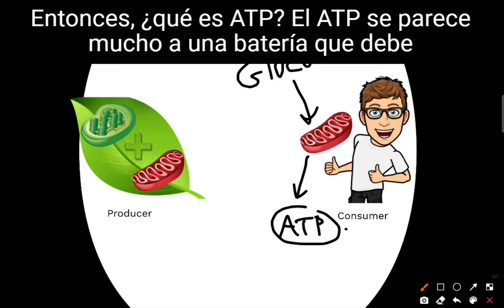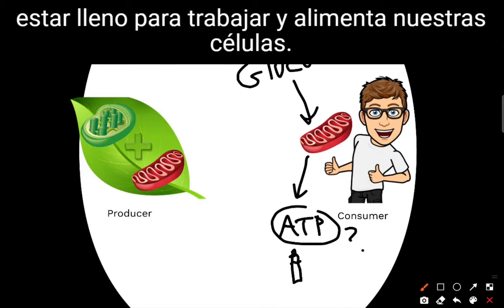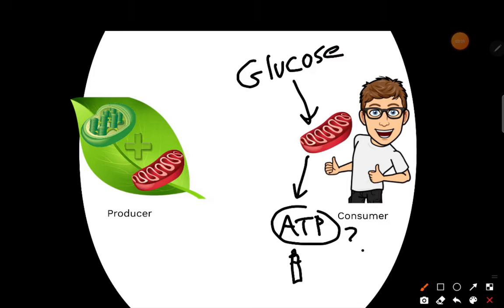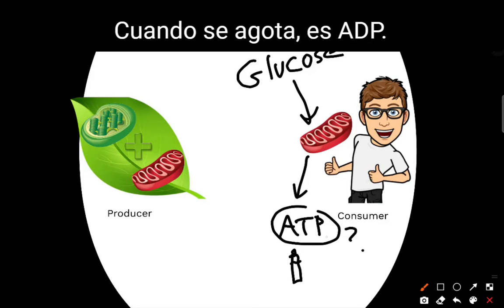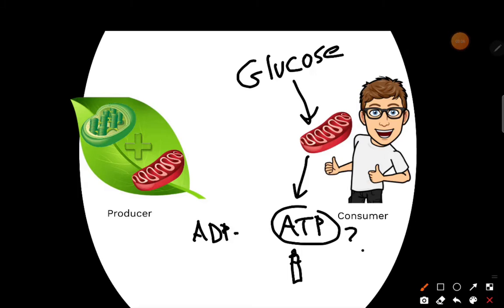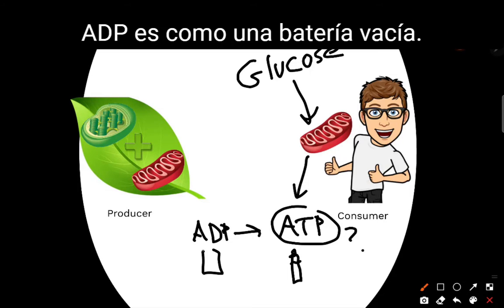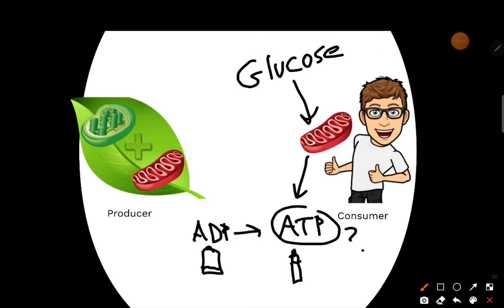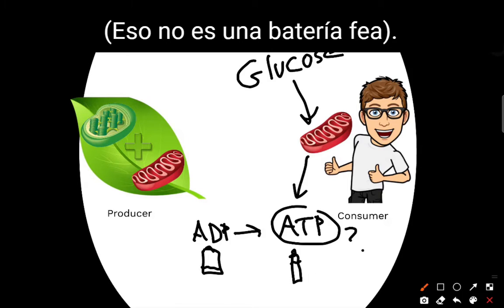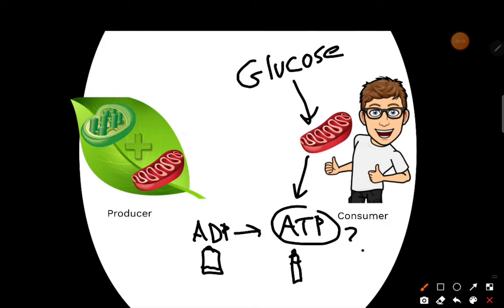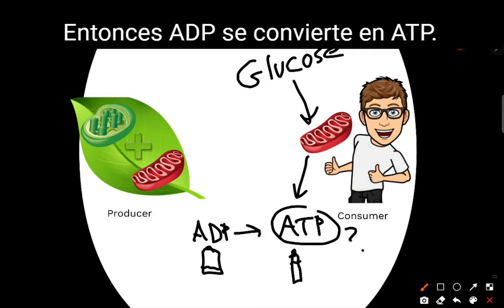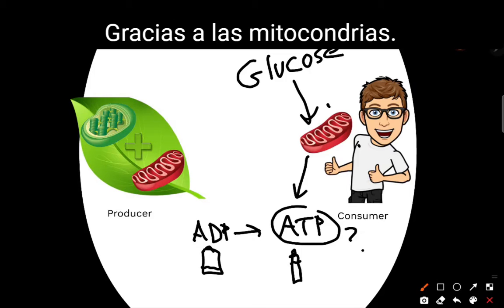So what's ATP? ATP is a lot like a battery that has to be full to work, and it powers our cells. When it is used up, it is ADP. ADP is like an empty battery. So ADP becomes ATP thanks to the mitochondria.